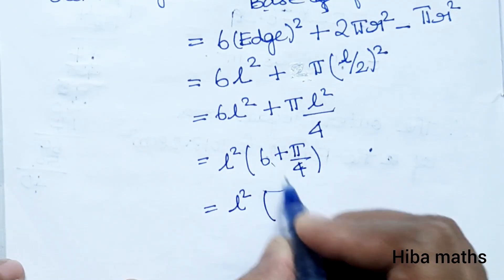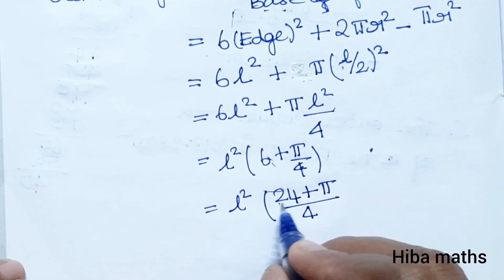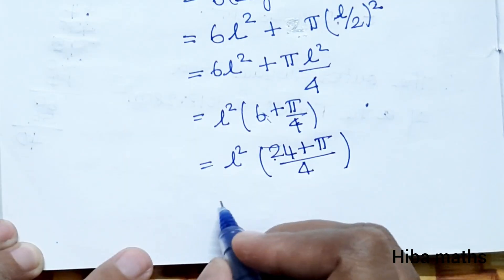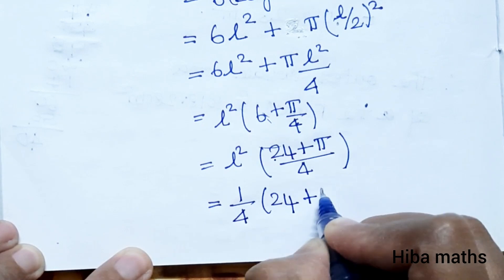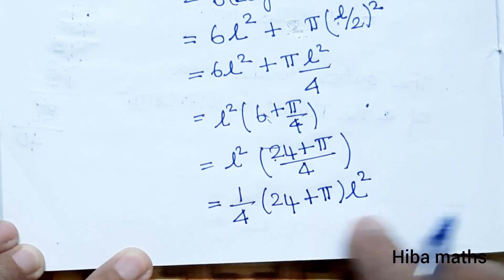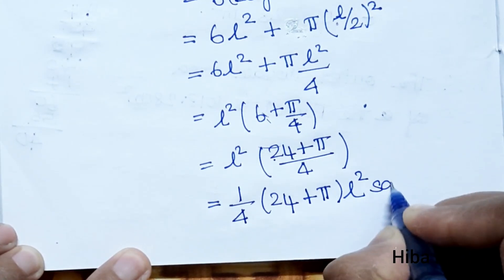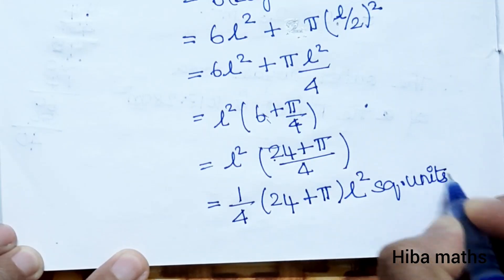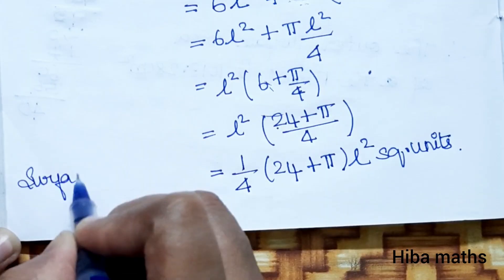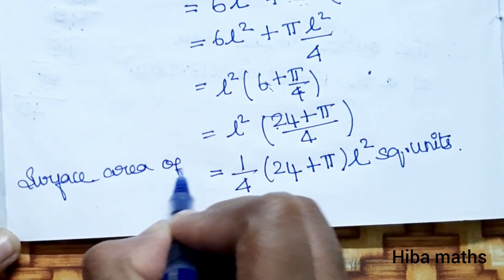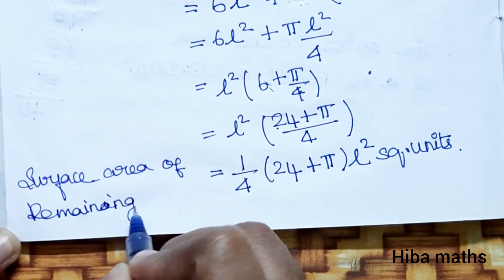Substituting r = l/2: the expression simplifies to 6l² + πl²/4, giving us the total surface area of the remaining solid as (24 + π)/4 times l² square units.